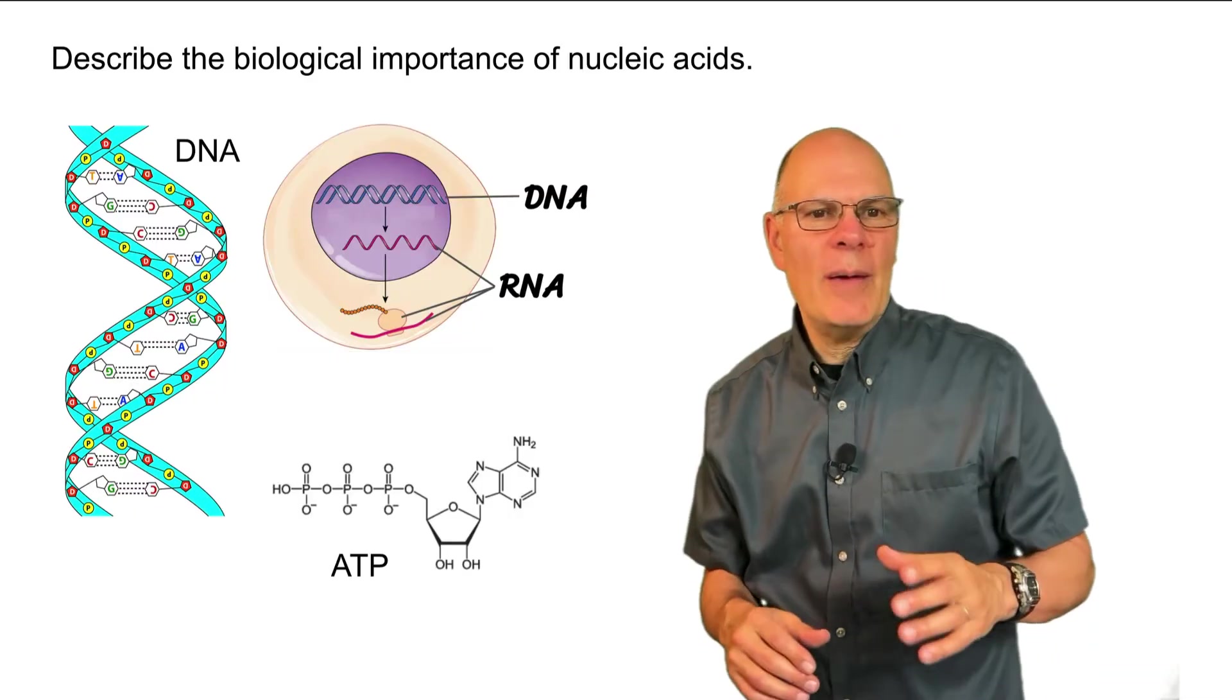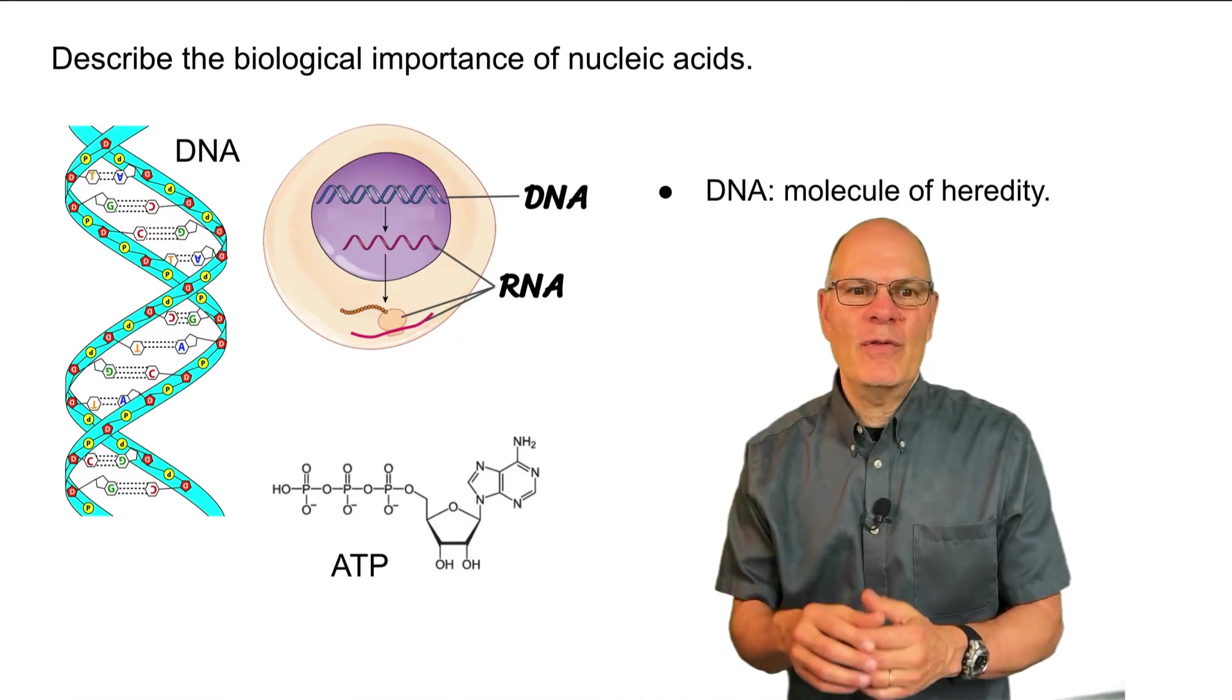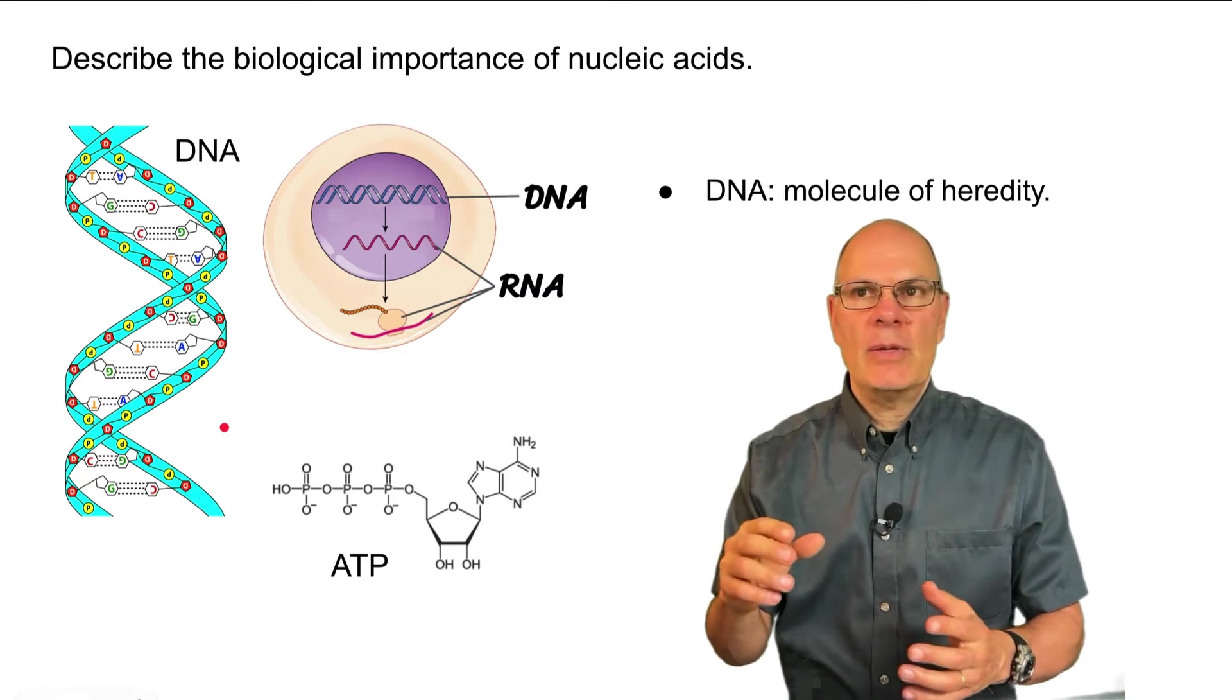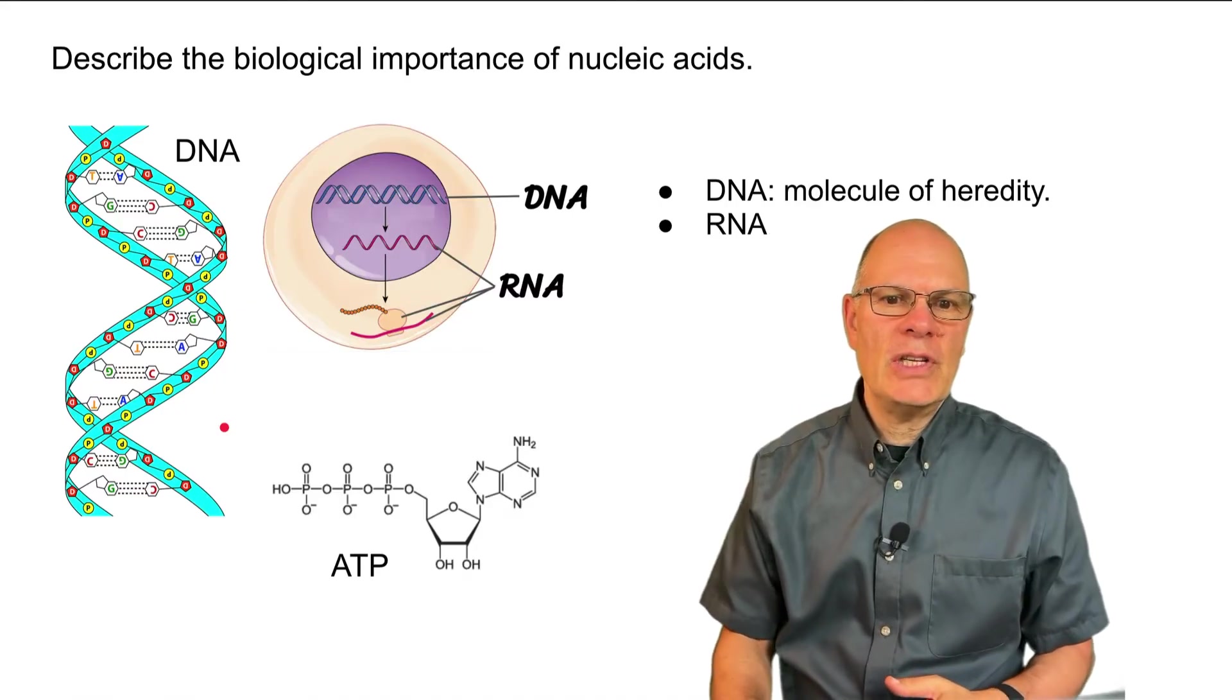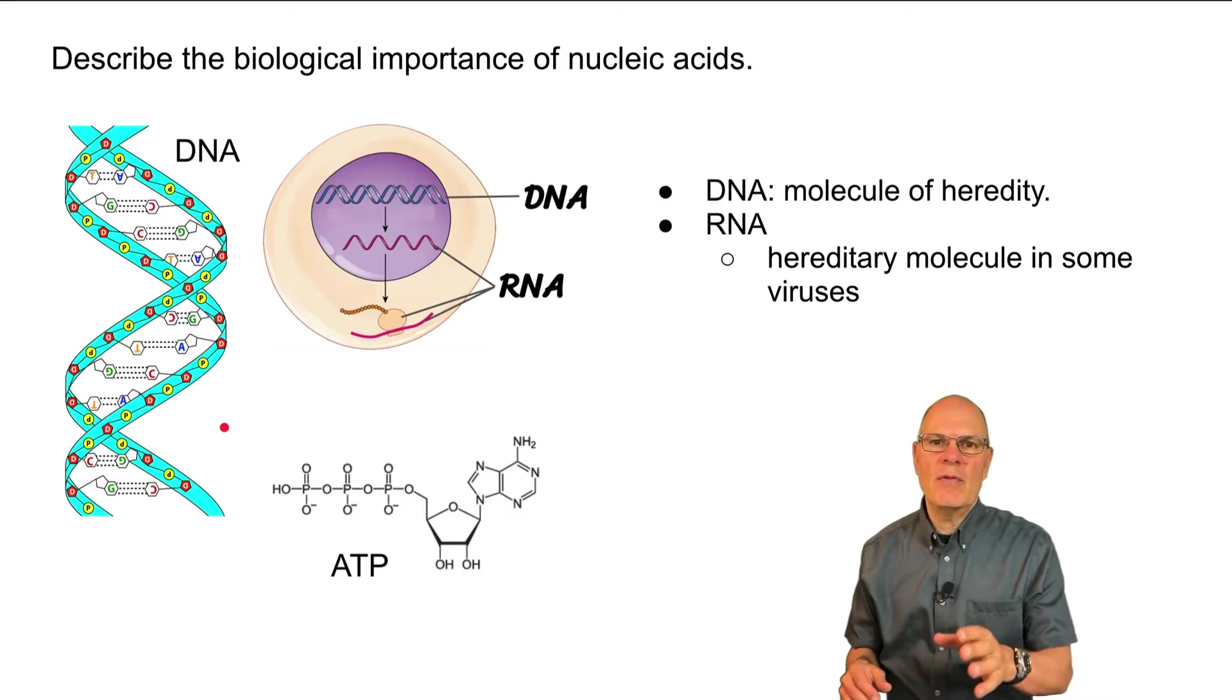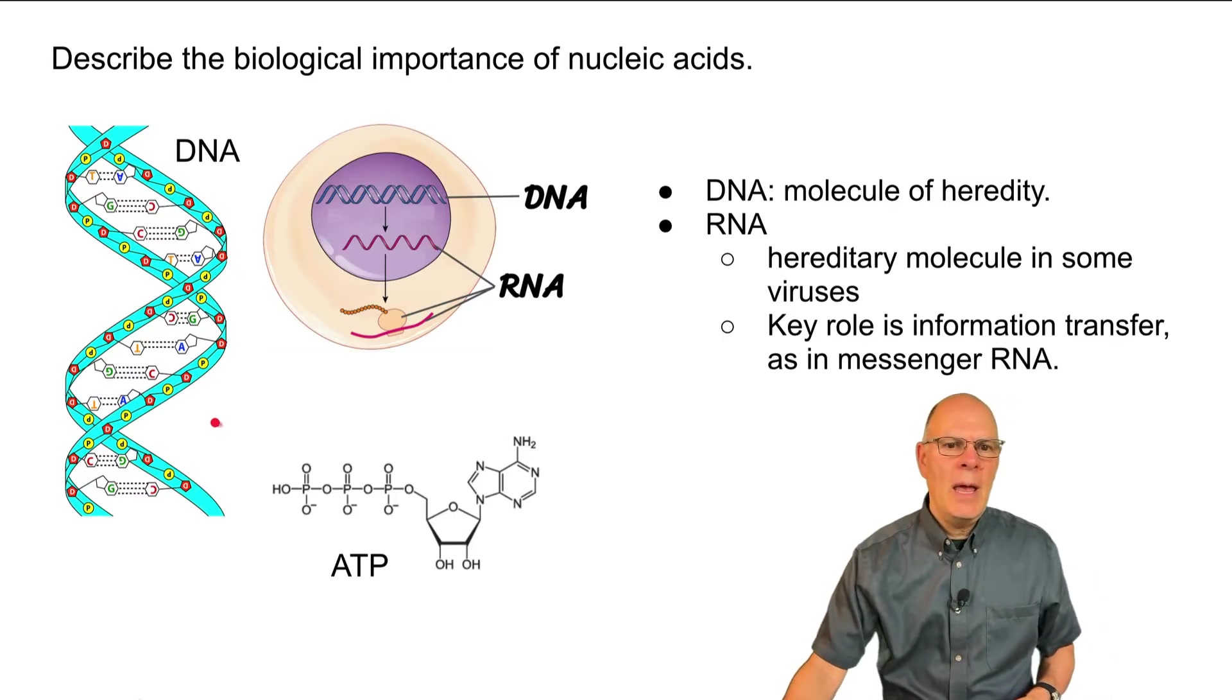We'll start by describing the biological importance of the nucleic acids. These are the molecules of genetic information. DNA is the molecule of heredity. It's what passes from generation to generation. It's the molecule that cells pass on as they divide and replicate within a multicellular organism. RNA has other functions. RNA is the hereditary molecule in some viruses, never in cells. And RNA's key role is information transfer, as in messenger RNA.